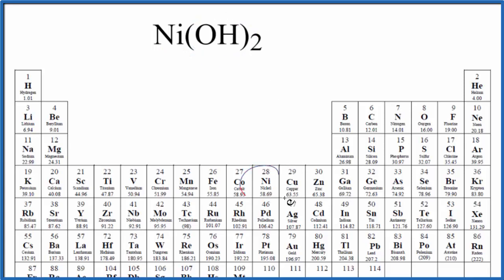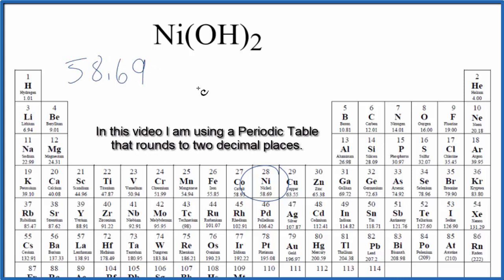On the periodic table, nickel is 58.69 in the unit grams per mole. I won't write the units right now. Let's write those at the end.